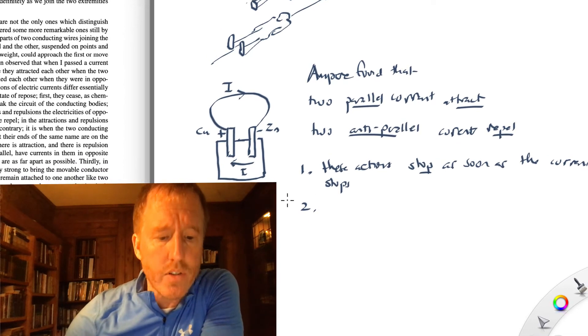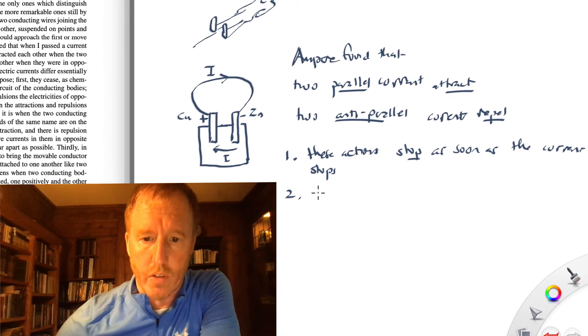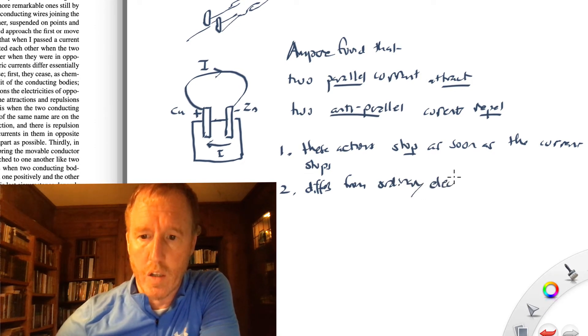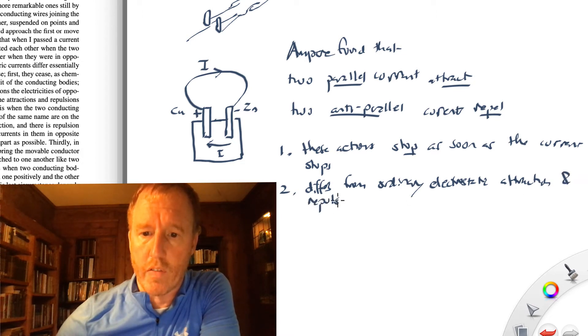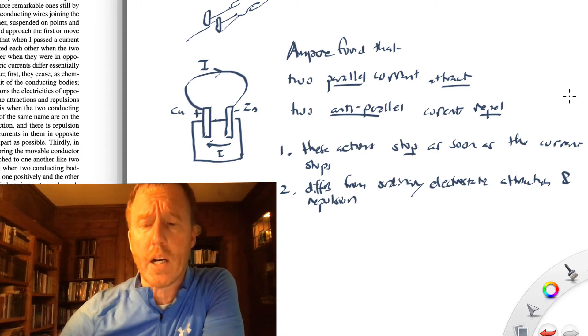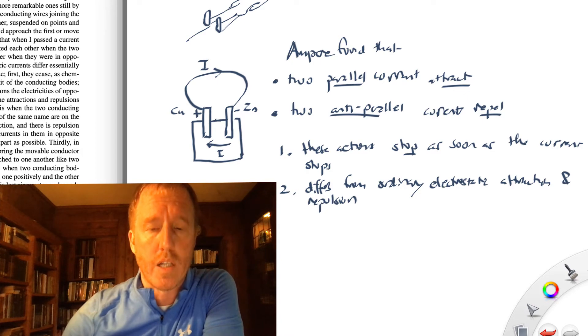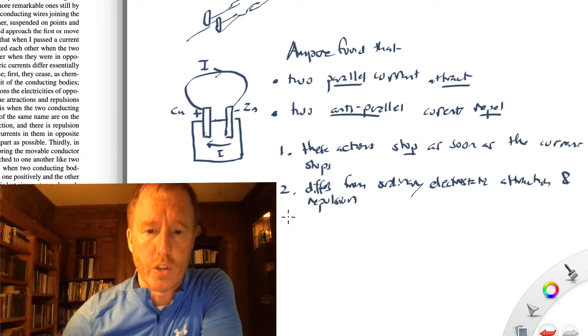Secondly, this differs from ordinary electrostatic attractions and repulsions. Why does this differ from ordinary electrostatic attraction repulsion? Well, because in electrostatic attraction and repulsion, if you have two of the same charges, say two positively charged objects, they repel one another. And if you have oppositely charged objects, they attract one another. So notice here with electrical currents, if you have two of the same kind of current, you might say, they're in parallel to one another. Those attract one another, whereas opposite currents, that is oppositely directed currents, anti-parallel currents, they repel one another. So this seems to be a different sort of thing than Coulomb attraction and repulsion due to charges.